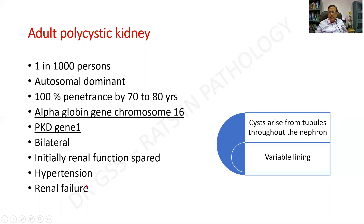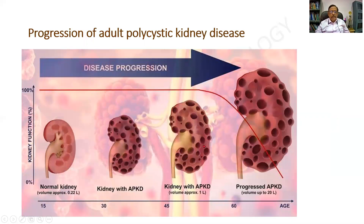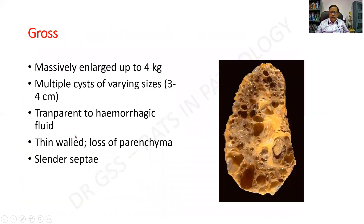The cysts arise from the tubules throughout the nephron, and there will be variable lining because different sites of the nephron have different lining. Initially there is a normal kidney, but with the abnormality of the gene, polycystic lesions develop and the kidney becomes massively enlarged, sometimes almost filling an entire specimen jar. Grossly, it is a massively enlarged kidney; the corticomedullary differentiation cannot be made out, the pelvicalyceal system is distorted, and it can weigh up to 4 kg.